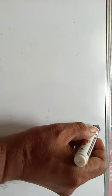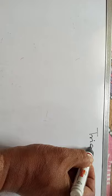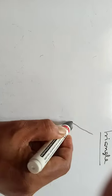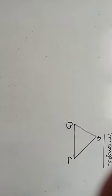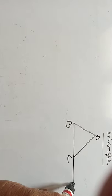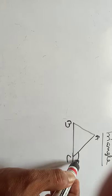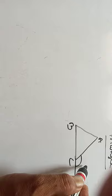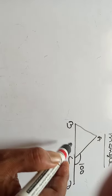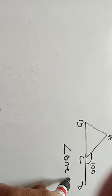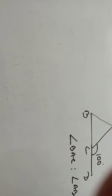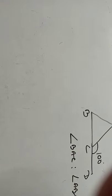Triangle ABC. BC is extended to D. If this angle is 100 degrees, and the ratio of angle BAC to angle ABC is equal to 2 is to 3.